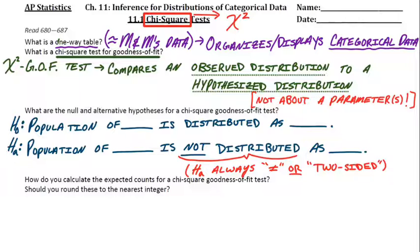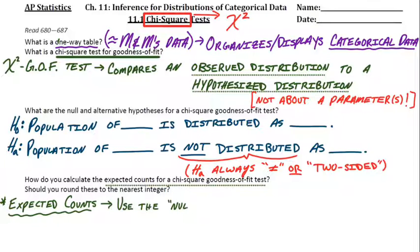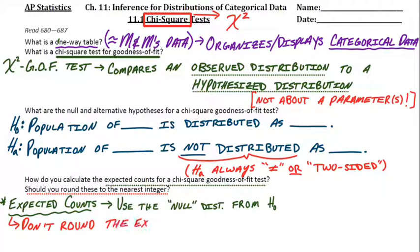How do you calculate the expected counts for a chi-square goodness of fit test? And should we round it to the nearest integer? For the expected counts, you always use the null hypothesis. We start out by assuming that null hypothesis is true. So we're going to create our expected counts based on what the null distribution says. Should we round those off to the nearest integer? And no, don't do that. Don't round the expected counts.